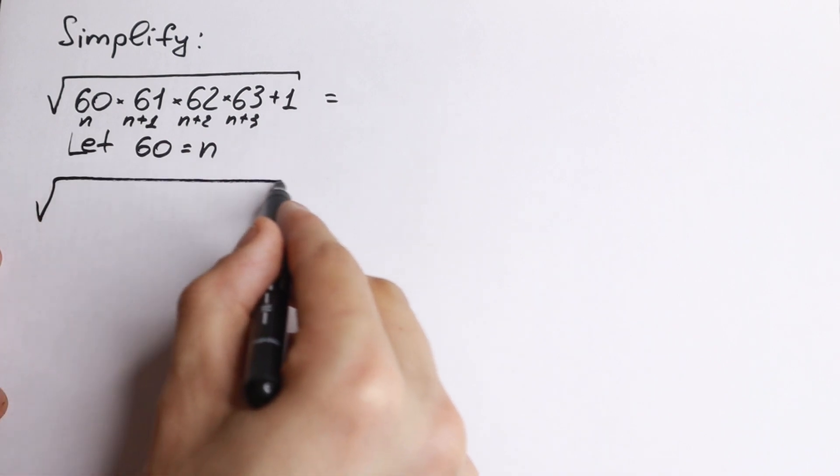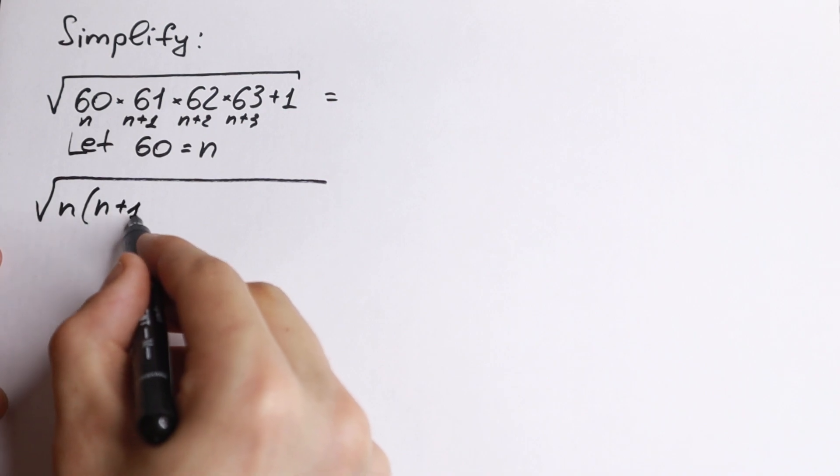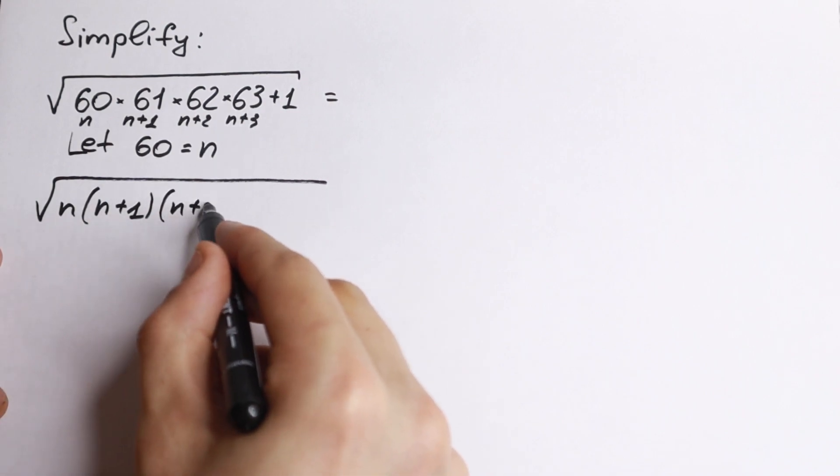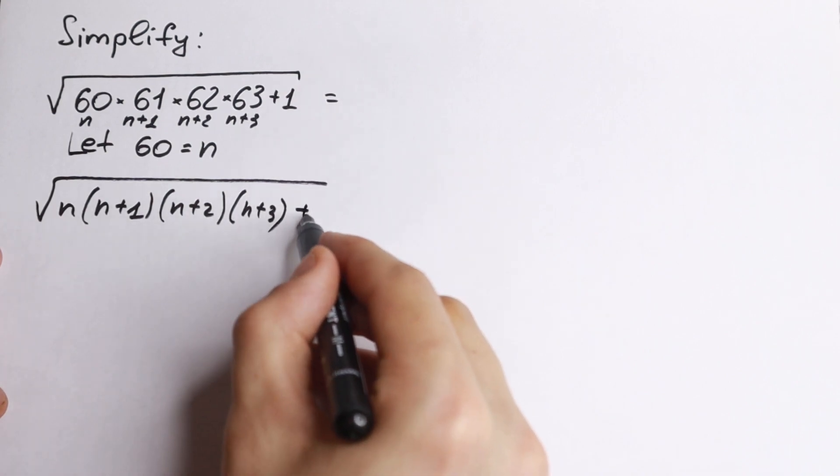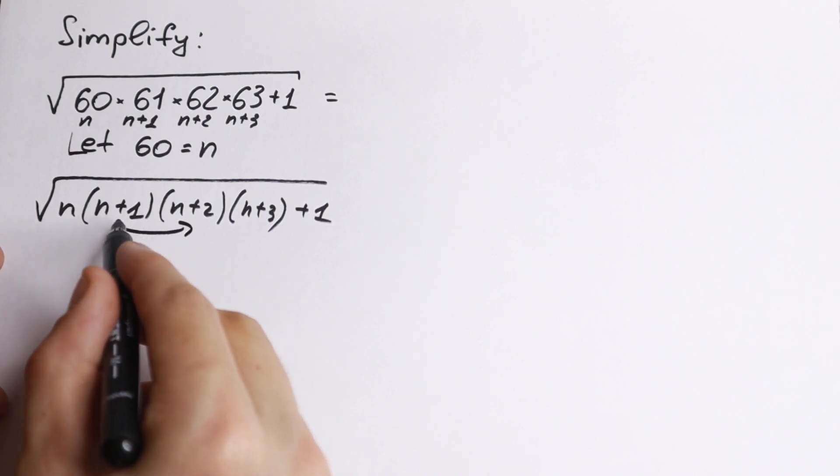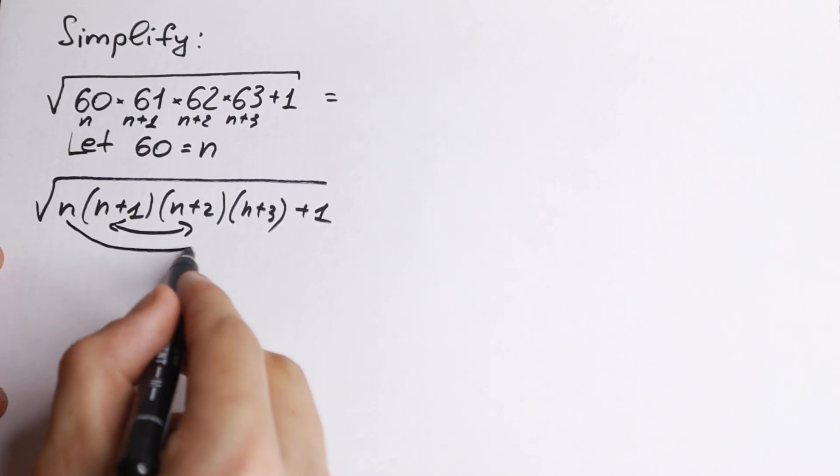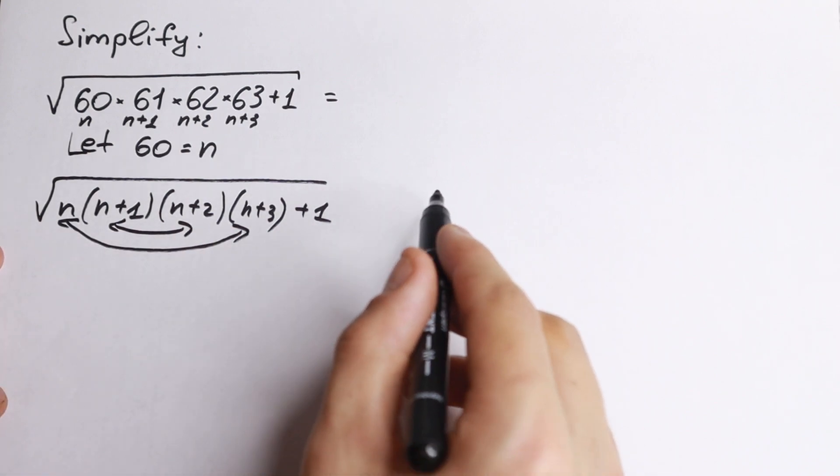What we have as a result, we have square root of a long product we have n times n plus 1 times n plus 2 and times n plus 3 and in the end plus 1 and right now I'm going to use a little bit tricky moment right now because I wanted to multiply it, so this in the middle I wanted to multiply it by itself and this right here I want to multiply it. We can do this because all product, we can easily do this.